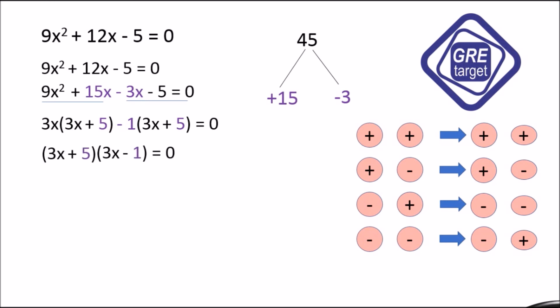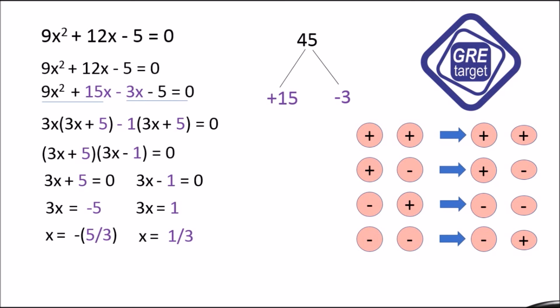So the common term is (3x + 5) and the remaining is (3x - 1) = 0. Therefore 3x + 5 = 0 and 3x - 1 = 0. From the first: subtract 5 from both sides to get 3x = -5, then divide by 3 to get x = -5/3. From the second: add 1 to both sides to get 3x = 1, then divide by 3 to get x = 1/3. Thank you.